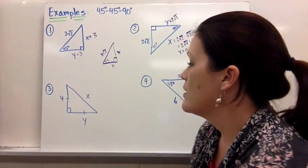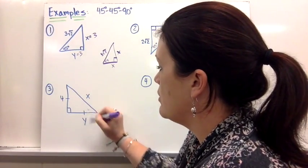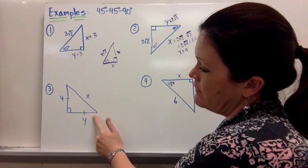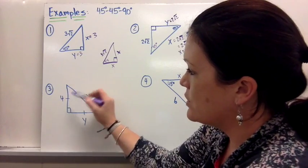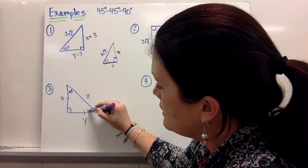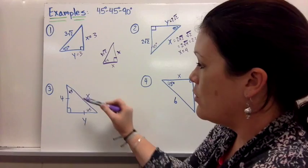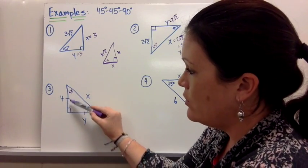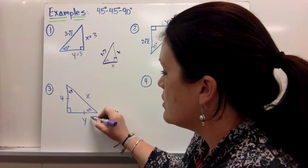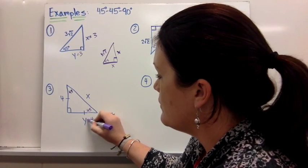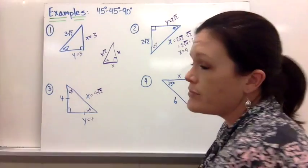For number 3, I'm given a leg of 4. Even without the angles written in, if you know the legs are equal, that means the two base angles must also be equal, and therefore both equal 45 degrees — an isosceles right triangle. So the other leg is also 4, and the hypotenuse is 4 square root 2. Sometimes these are very straightforward.